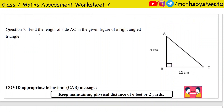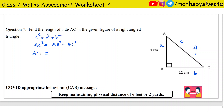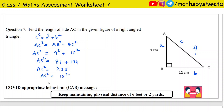Question number 7: Find the length of side AC in the given figure of a right-angle triangle. Since it is a right-angle triangle, we use the Pythagorean theorem: c² equals a² plus b². So AC² equals AB² plus BC². AB is 9 and BC is 12, so AC² equals 9² plus 12², which is 81 plus 144, giving 225. The square root of 225 is 15, so AC equals 15 centimeters.